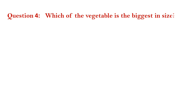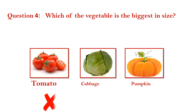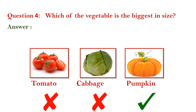Question number 4. Which vegetable is the biggest in size? Tomato — wrong. Cabbage — wrong. Pumpkin — right. Answer is pumpkin.